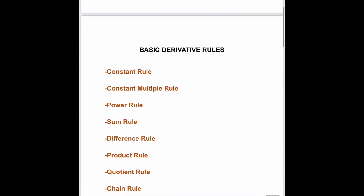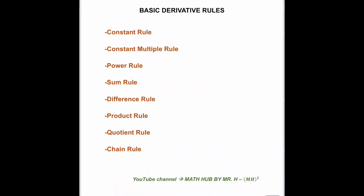First, let's take a look at the different basic derivative rules. The very first rule is what we call the constant rule. The derivative of any constant will be equal to zero. For example, finding the derivative of positive 100 will be equal to zero, and finding the derivative of 1/2 will be equal to zero. Derivatives are the slopes of the function.